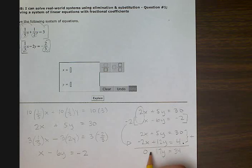So now I have seventeen y equals thirty four. So I'm going to divide by this seventeen. That gives me one y equals two. This is half of my answer. I need an x answer and a y answer.